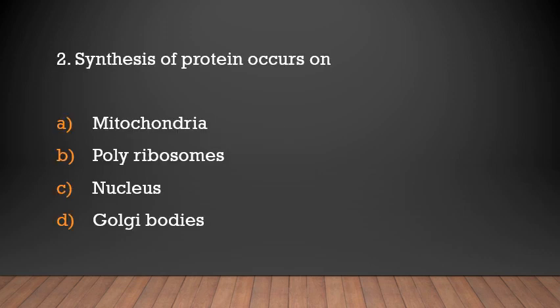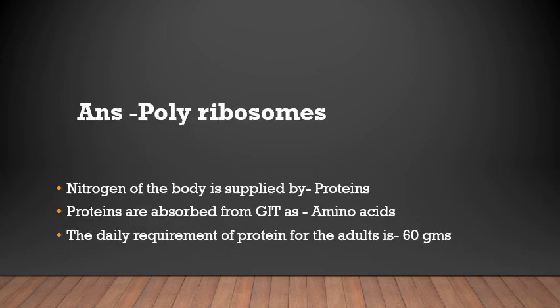Question: Synthesis of protein occurs on — mitochondria, polyribosomes, nucleus, or Golgi bodies? Answer: Polyribosomes. Nitrogen of the body is supplied by proteins. Proteins are absorbed from the GI tract as amino acids. The daily requirement of protein for an adult is 60 grams.